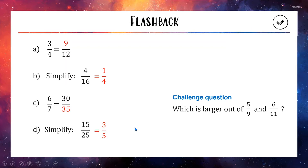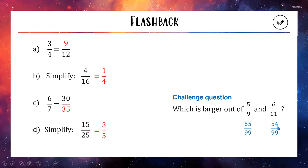For the challenge question, the best way to compare two fractions is to make their denominators the same. So I'll take 5 out of 9 and multiply top and bottom by 11, which gives 55 out of 99. Then the second fraction, multiplied top and bottom by 9, gives 54 out of 99. Now with the same denominator, we can see 55 out of 99 is slightly bigger than 54 out of 99, so 5 ninths is slightly bigger than 6 elevenths.